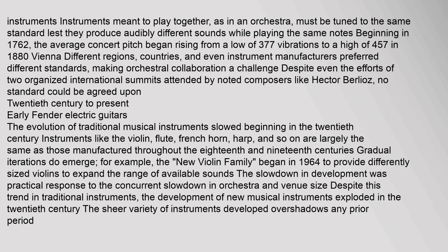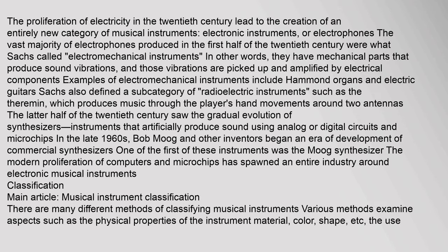The evolution of traditional musical instruments slowed beginning in the 20th century. Instruments like the violin, flute, French horn, harp, and so on are largely the same as those manufactured throughout the 18th and 19th centuries. The slowdown in development was a practical response to the concurrent slowdown in orchestra and venue size. Despite this trend in traditional instruments, the development of new musical instruments exploded in the 20th century. The proliferation of electricity in the 20th century led to the creation of an entirely new category of musical instruments — electronic instruments, or electrophones.